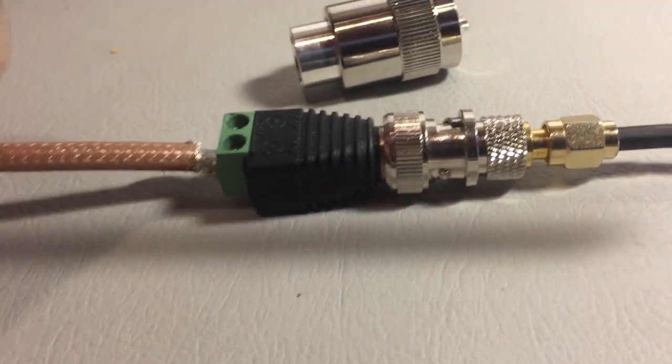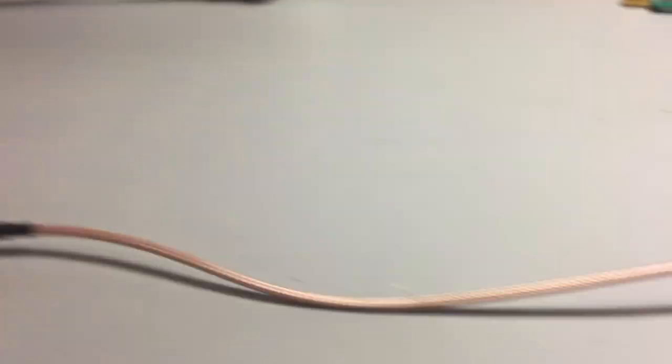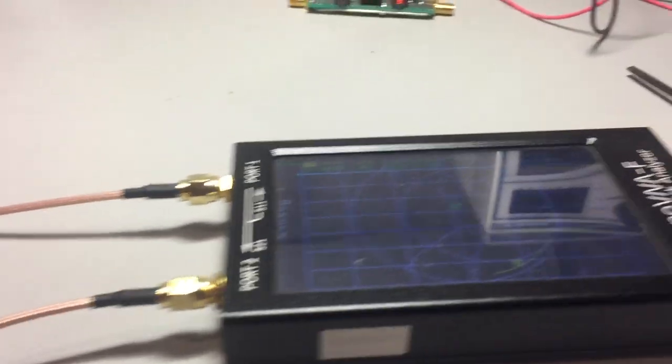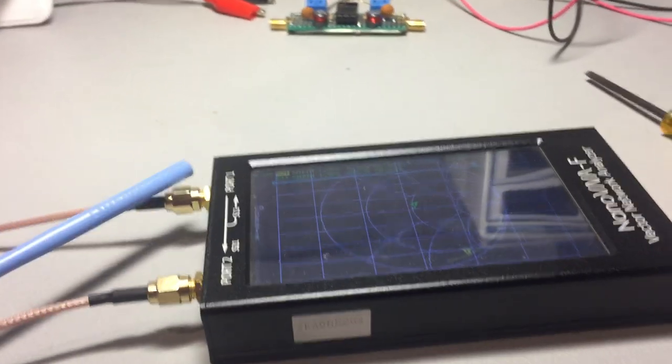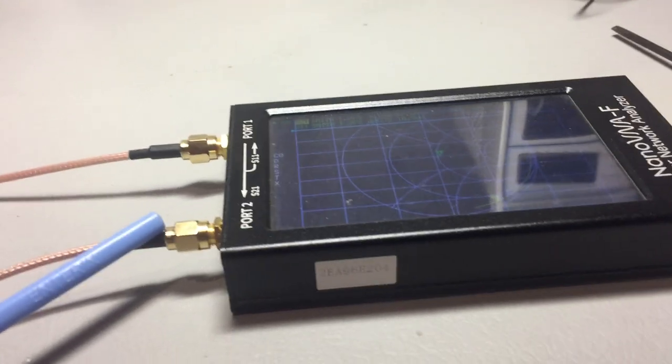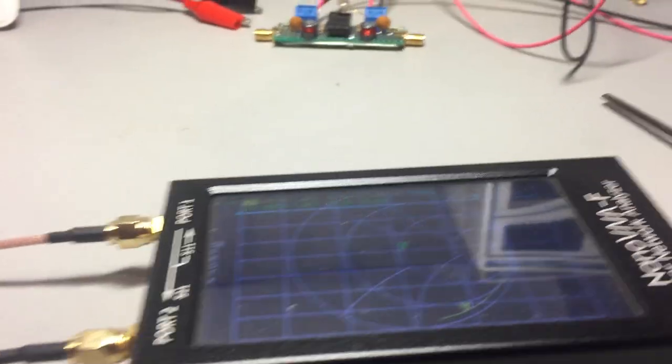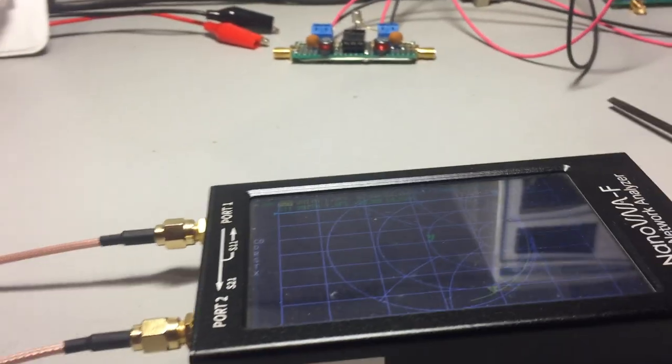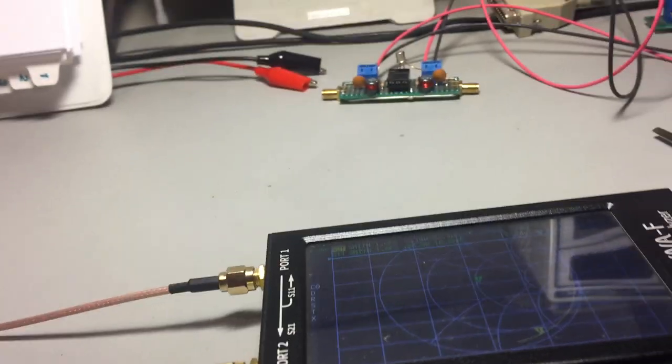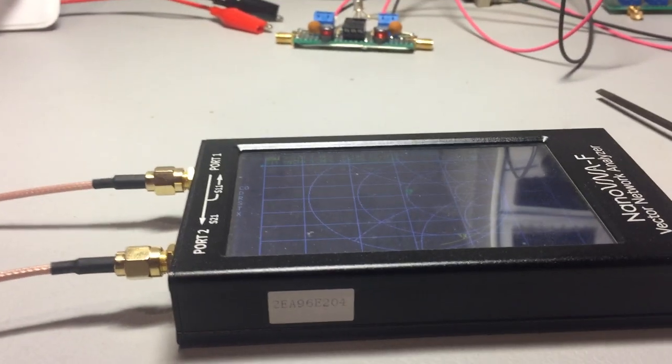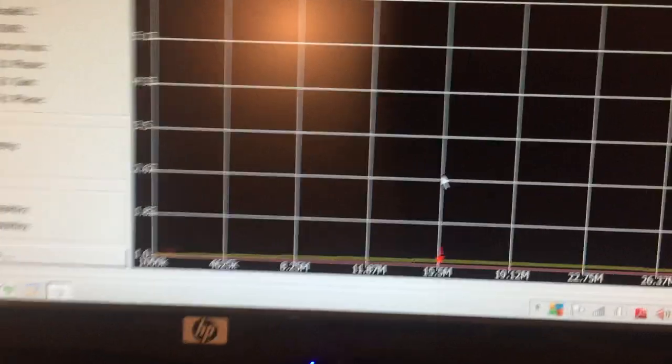You can test this a number of ways, but I believe this is most reliable using the nano VNA with port one and port two. Port one is 50 ohms, port two is 50 ohms. Port one sends out a signal, goes through the RF choke, comes back in, and it can measure the SWR and impedance. We'd expect the SWR to be basically one-to-one, otherwise we'd add impedance and couldn't match our antenna system. Let's go to the software.